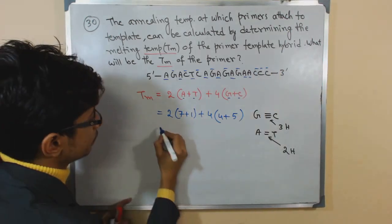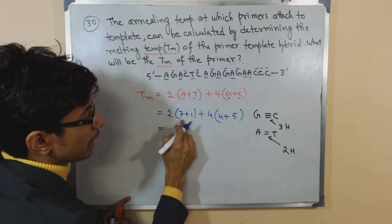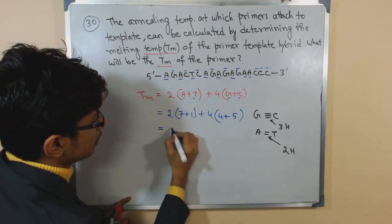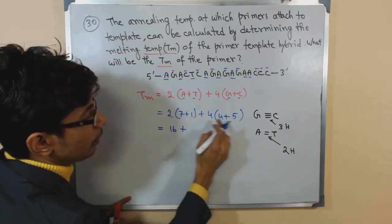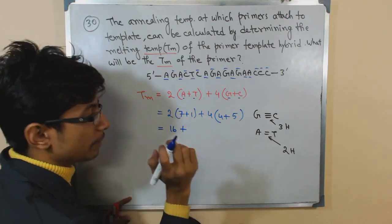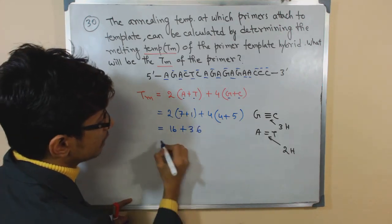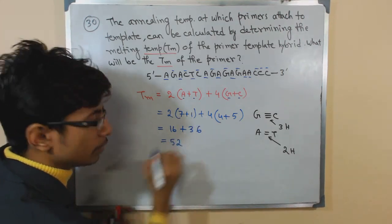We put the values here: 2 multiplied by 7 plus 1 means 8 - that's 16. Plus 4 multiplied by 4 plus 5 means 9 - that's 36. It will give you a value of 52.